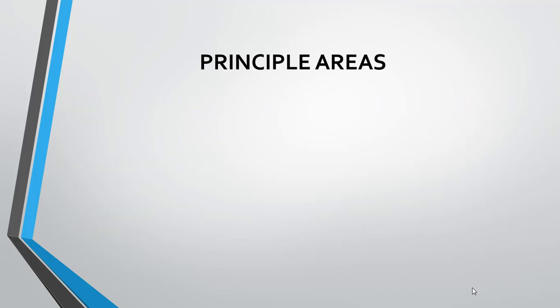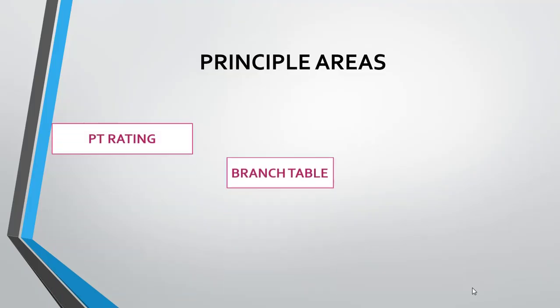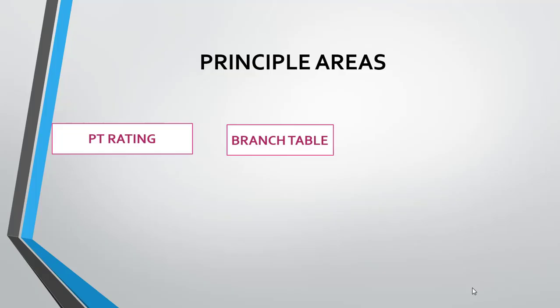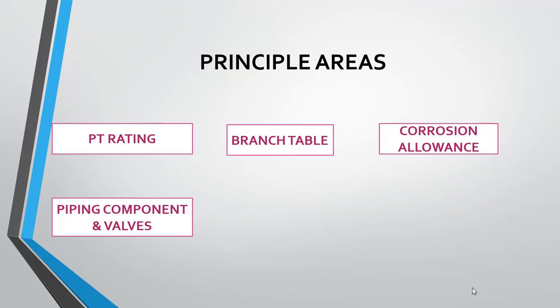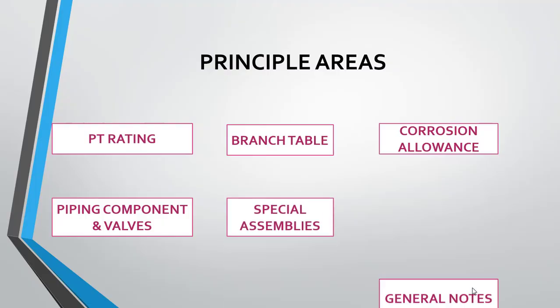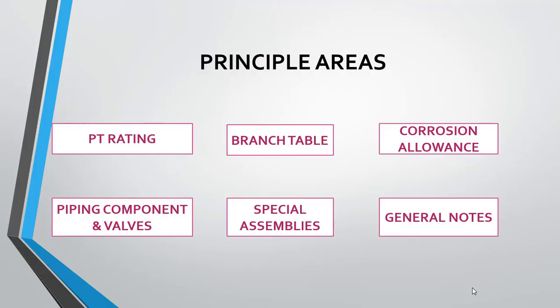Let's look into the principal areas of piping class. A piping class has six principal areas. The first one is PT rating. The second is branch table. The third is corrosion allowance. The fourth is piping components and valves. The fifth is special assemblies. And the sixth is general notes.